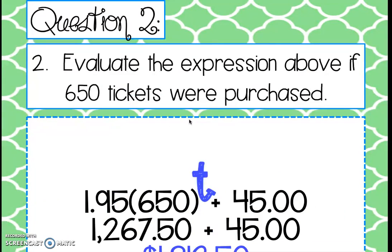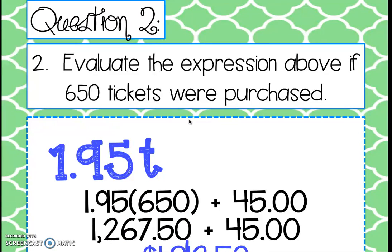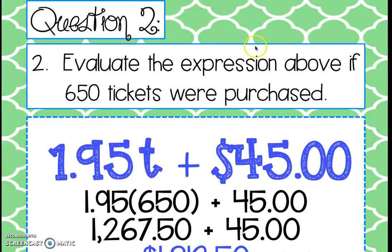Question two asks us to evaluate the expression if we're getting 650 tickets. We have our expression $1.95t + $45, and we substitute 650 in for t, giving us $1.95 × 650 + $45. Using order of operations, we do the multiplication first and get $1,267.50, then add the $45 setup fee to get a final answer of $1,312.50 to print 650 tickets.